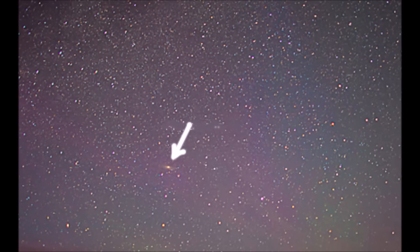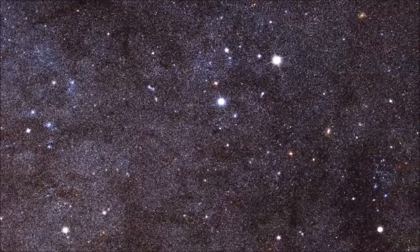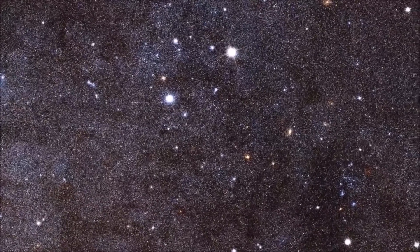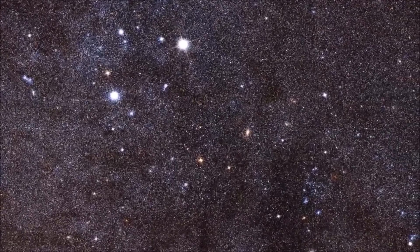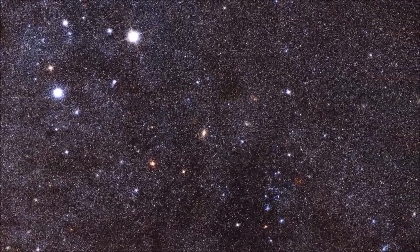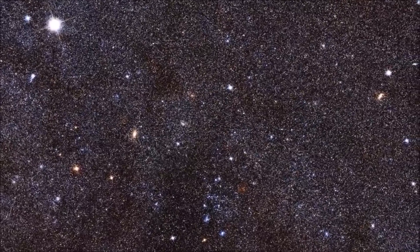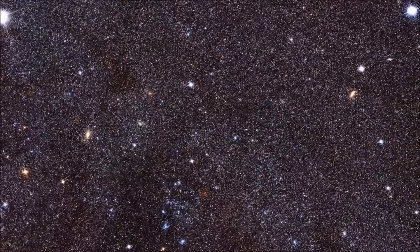It is also known as Messier 31, M31, and NGC 224. It has a visual magnitude of 2.3, and hence it is the brightest of the Messier objects in the local group. You can see it in the sky with the naked eye on a clear night, but not with much detail.